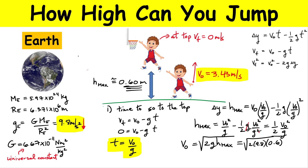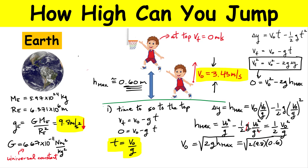A quick tip: you could get this right away using the third kinematic equation. At the top, V-final is zero, so you're left with V-initial squared minus 2 times little g times H-max equals zero — the same expression. Going forward, we assume this initial velocity applies on all other planets. The maximum height equation is H-max equals one-half V-naught squared over little g, and the total flight time — since it takes the same time to go up as to come down — is simply 2 times V-naught divided by little g.